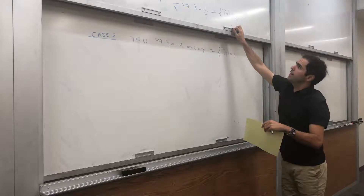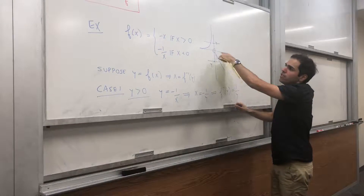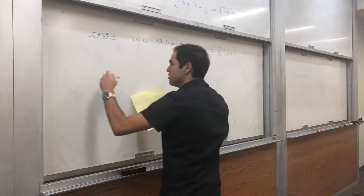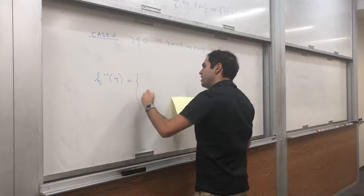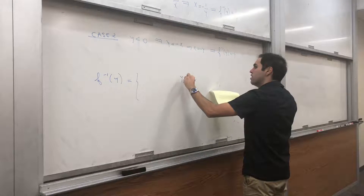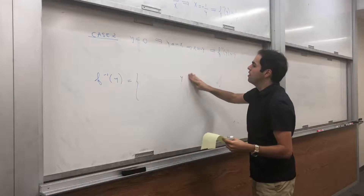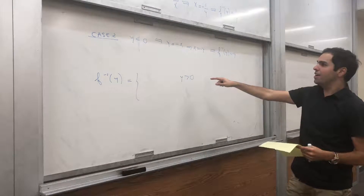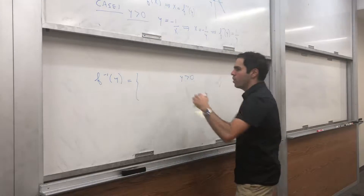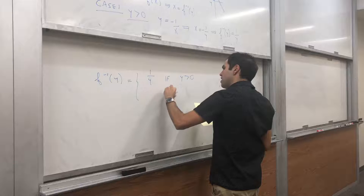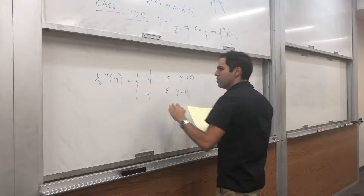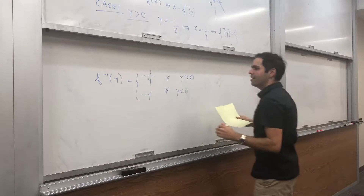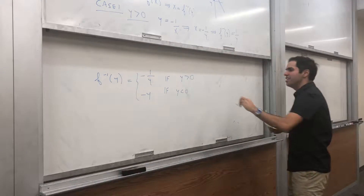Those are really all the cases, because notice f is never 0 by definition. So f inverse is defined as follows: if y is positive, f inverse of y is minus 1 over y; and if y is negative, f inverse of y is minus y.